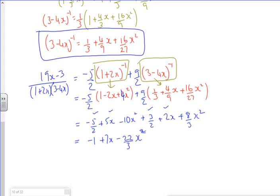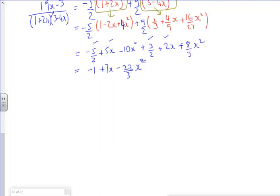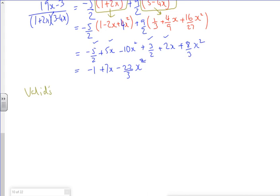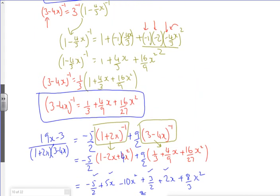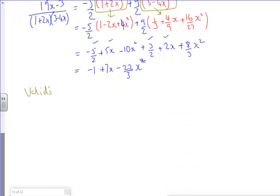So in terms of the valides, so I had 1 plus 2x, and 1 plus 2x to the power minus 1. So that's valid for the modulus of 2x is less than 1. So that would lead to x being okay between plus or minus a half.